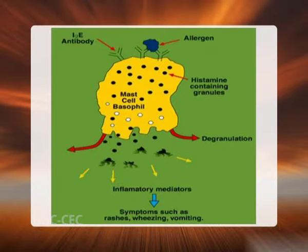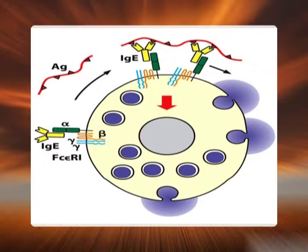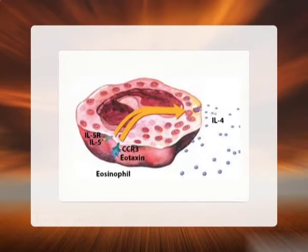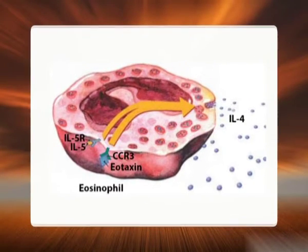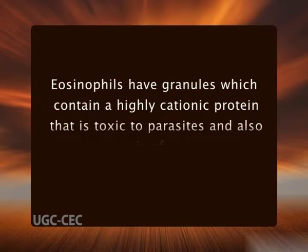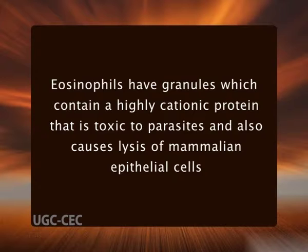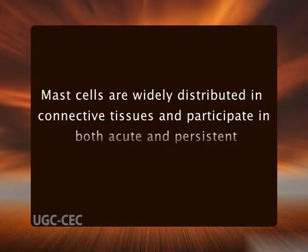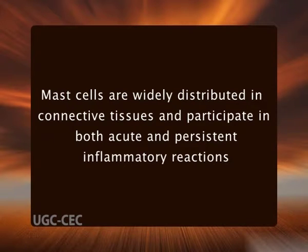Eosinophils are abundant in immune reactions mediated by immunoglobulin E and in parasitic infections. The recruitment of eosinophils involves extravasation from the blood and immigration into tissue by processes similar to those for other leukocytes. One chemokine especially important for eosinophil recruitment is eotaxin. Eosinophils have granules containing a highly cationic protein that is toxic to parasites but also causes lysis of mammalian epithelial cells. They may be of benefit in controlling parasitic infections but can contribute to tissue damage in immune reactions.